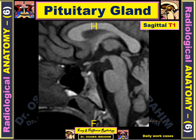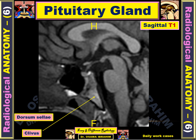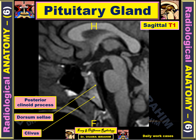This MRI sequence is the sagittal T1, because CSF in the prepontine cistern and fourth ventricle appears dark, and the bone marrow in the clivus appears bright. So this is T1 in sagittal view. The clivus is identified here, the dorsum sellae is the most bony part of the clivus, the posterior clinoid process is within the sella turcica, and the anterior clinoid process is also identified.